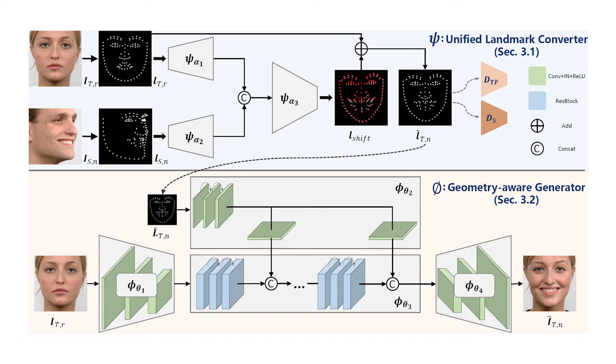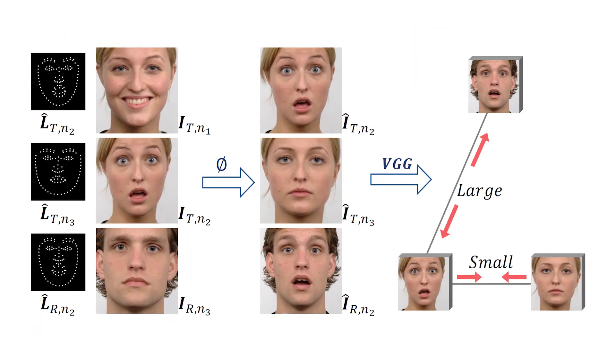The unified landmark converter adopts an encoder-decoder architecture to convert expression in a latent landmark space, while the geometry-aware generator leverages the converted landmark to re-enact the photorealistic image with a reference image of the target person.